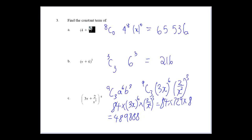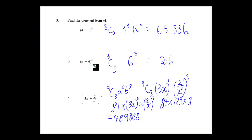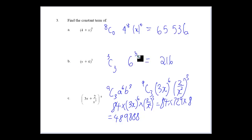Finding the constant term: if it's going to be a constant term, it's going to be the first term here. So 8C0 for the power of 8, we'll have x to the power of 0, and we get that number. For this one, it's going to be the last term. So we go 3C3 — there are going to be four terms, that'll be the fourth one — and we're just going to have x to the power of 1 times 6 to the power of 3.